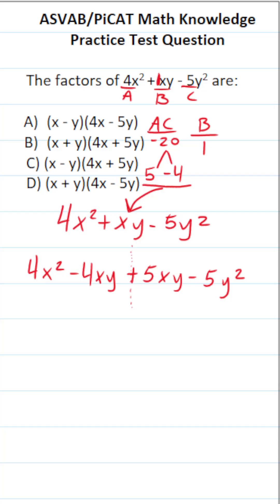I can factor out a 4x. This leaves me with x minus y in parentheses. And what can I factor out from 5xy minus 5y squared? I can factor out a 5y. This leaves me with x minus y in parentheses.